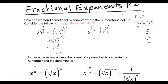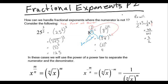If we have eight to the two-thirds, we have eight to the one-third raised to the power of two, which is the third root of eight raised to the power of two, which is two raised to the two, which is four. The denominator of our fraction ends up on the root, and the two ends up on the outside as our exponent.